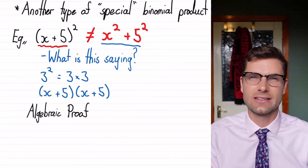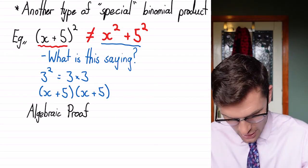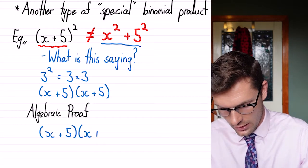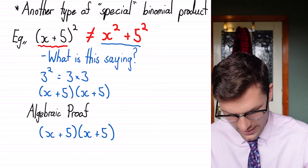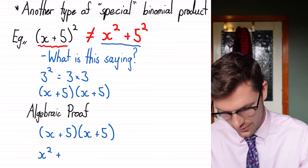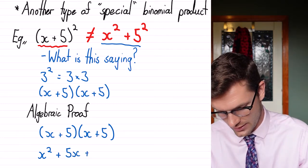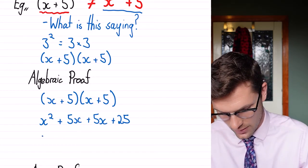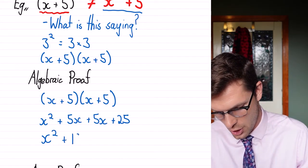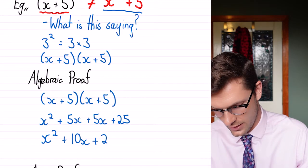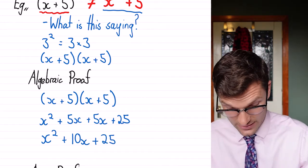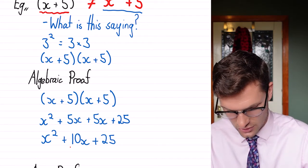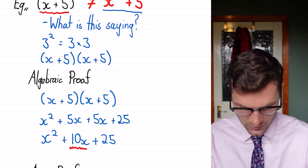We're going to look at how to solve this algebraically first. So we've got x plus 5, x plus 5. If we FOIL this one out, we've got x squared plus 5x plus 5x plus 25, which is equal to x squared plus 10x plus 25. So we can see that even though it's close to our original guess, we've got this term in the middle. And we're going to see where that comes from.